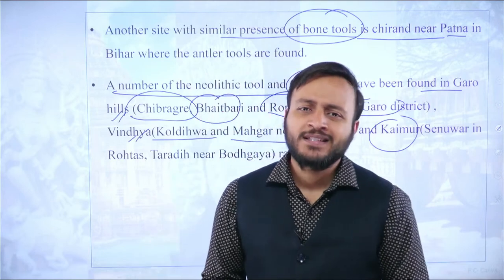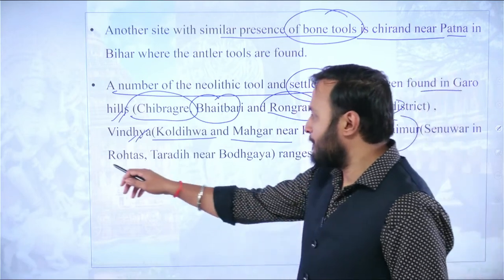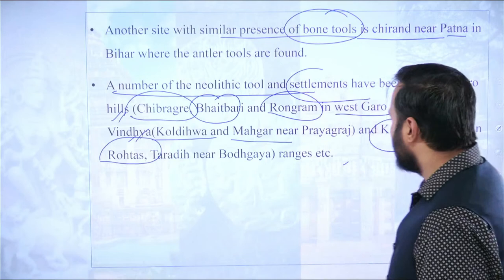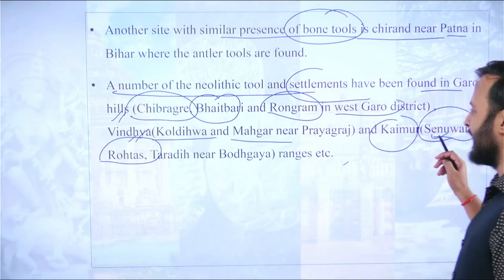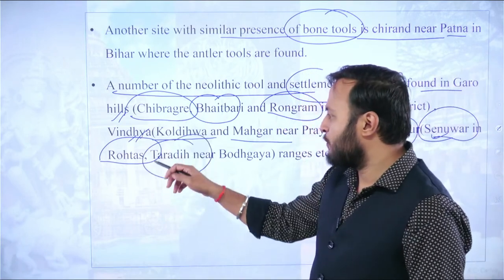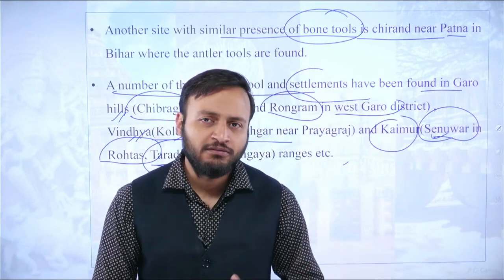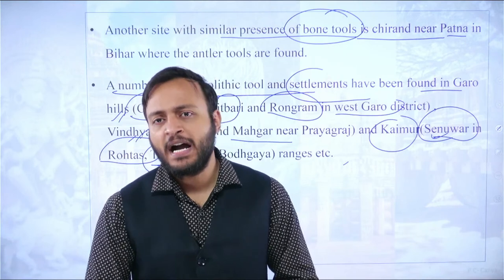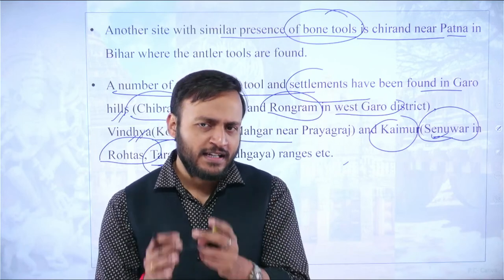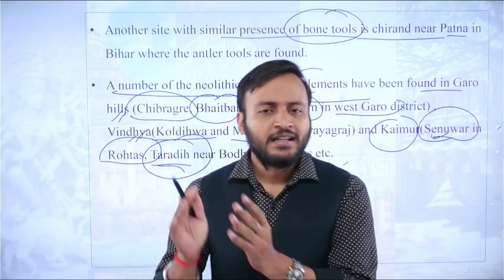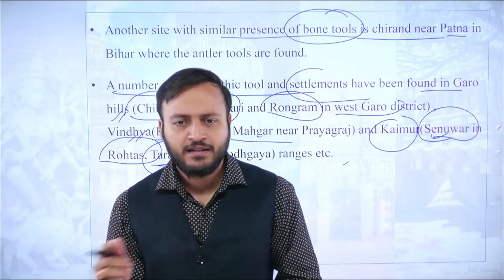Neolithic sites have also been recovered from the plateau region of Bundelkhand, but those are still under excavation and not in any books. In the Kaimur range, the Rohtas district of Bihar has a place called Senwar, and near Bodhgaya there is a place called Taradi. Taradi and Senwar are two famous Neolithic places in the Bihar region. The western part of Bihar and Jharkhand constitutes the Kaimur region, while southern Bihar and eastern Jharkhand is the Chhotanagpur region.